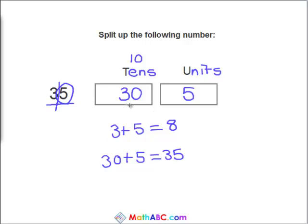There you have it. We have split up 35 into tens and units, a 30 and a 5. Let's try some more and we can move a little faster now.